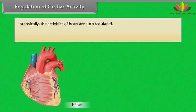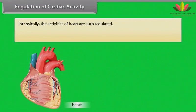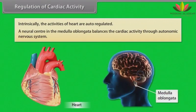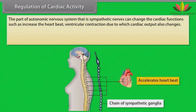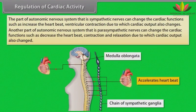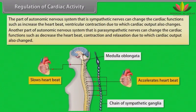Regulation of cardiac activity. Intrinsically, the activities of the heart are auto-regulated. A neural center in the medulla oblongata balances cardiac activity through the autonomic nervous system. The sympathetic nerves can alter cardiac functions such as heart rate, contraction, and relaxation, thereby changing cardiac output.